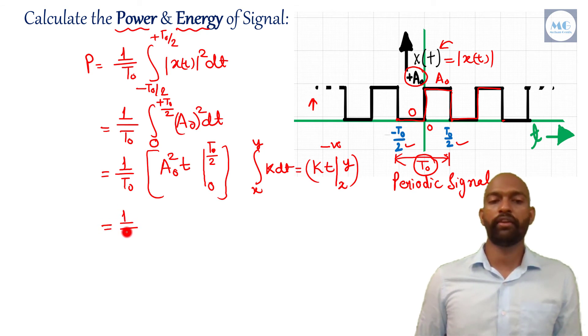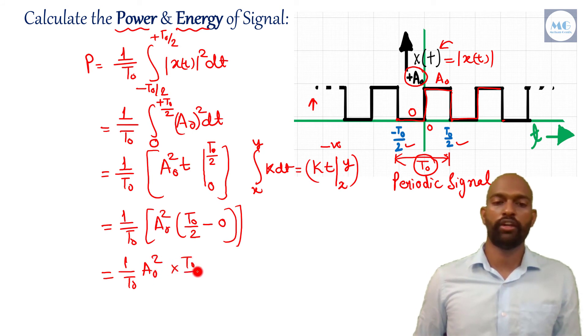Now we have to further simplify it, 1 by t0, a0 square, first we have to put t0 by 2 in place of t. So what will be it, t0 by 2 and then minus this lower limit, 0. By solving this, what we can write, 1 by t0, a0 square into t0 by 2, t0 and t0 will be cancelled, and what will be our answer? A0 square by 2, this will be our answer.